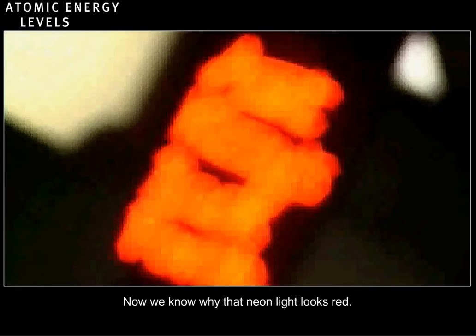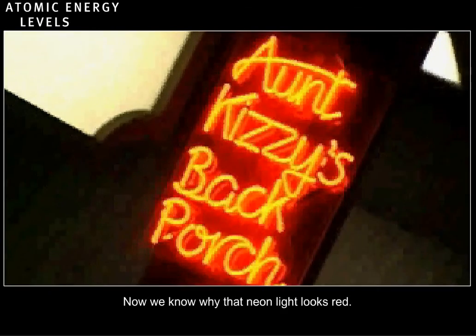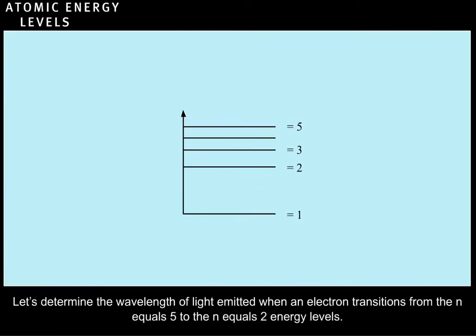Now we know why that neon light looks red. Let's determine the wavelength of light emitted when an electron transitions from the n equals 5 to the n equals 2 energy levels.